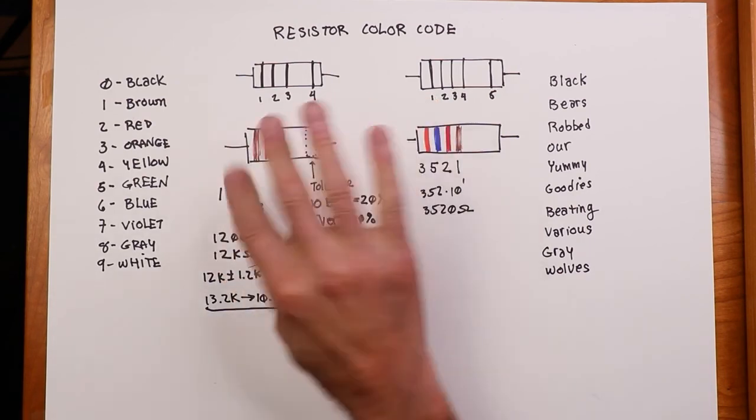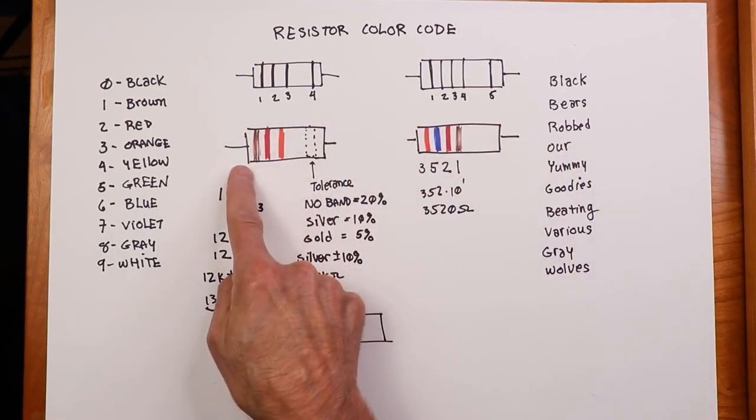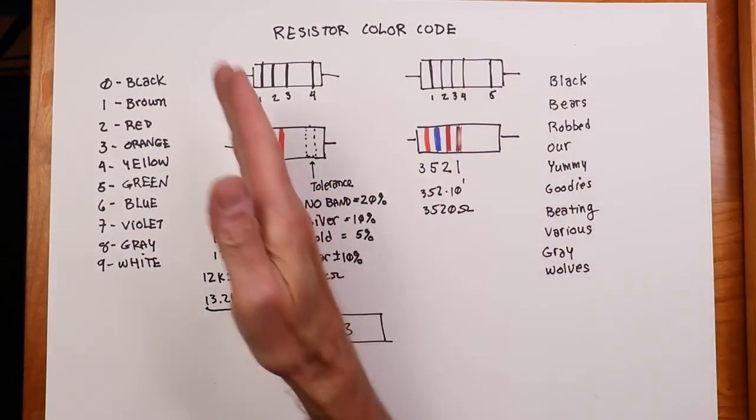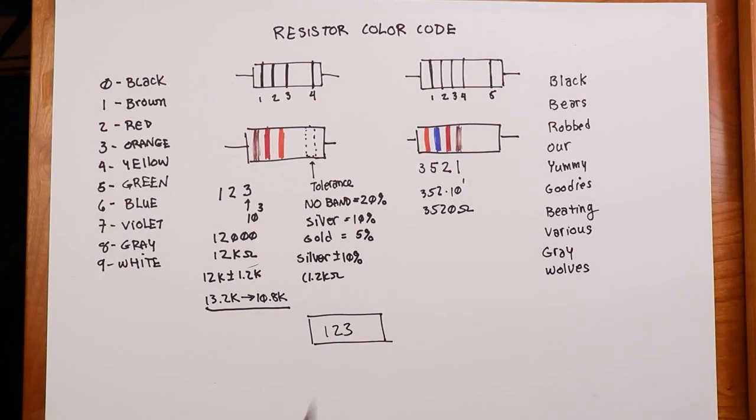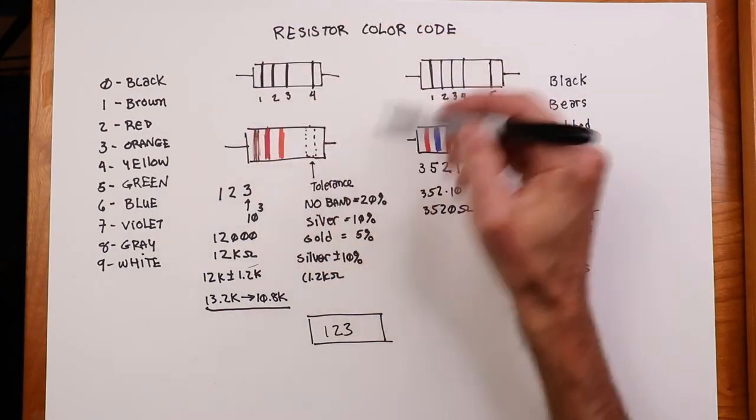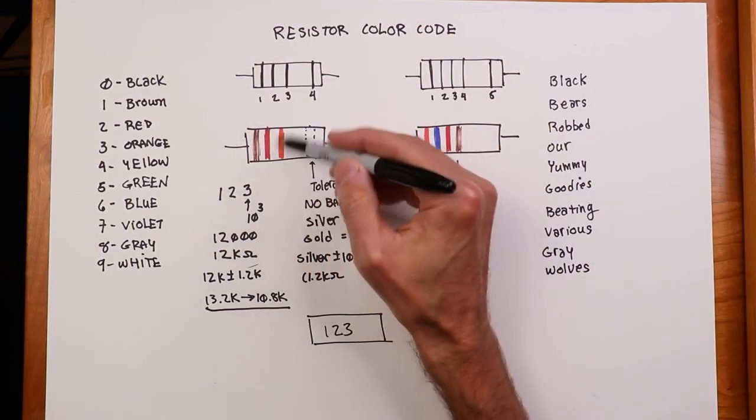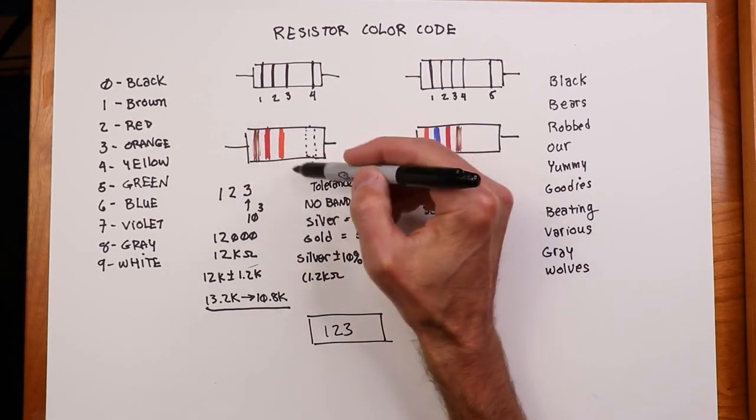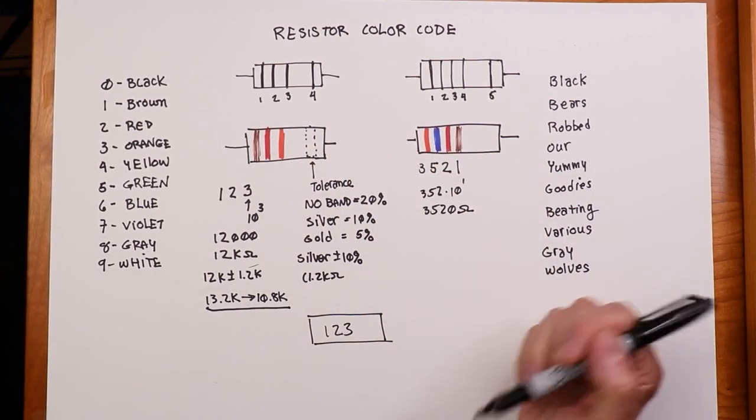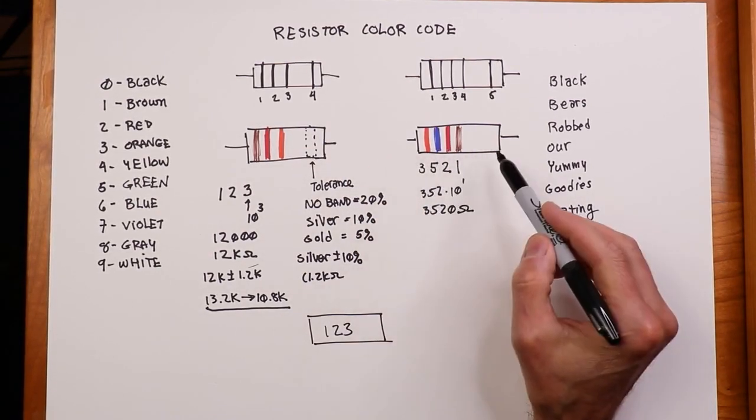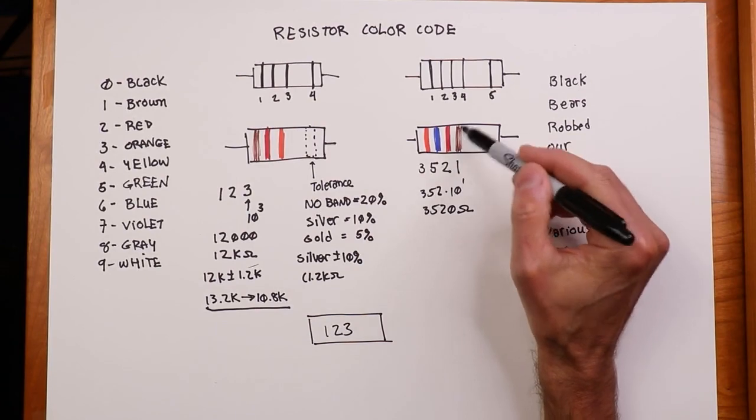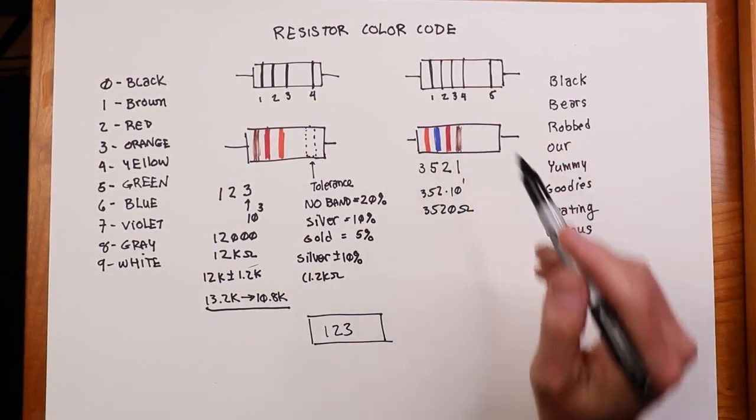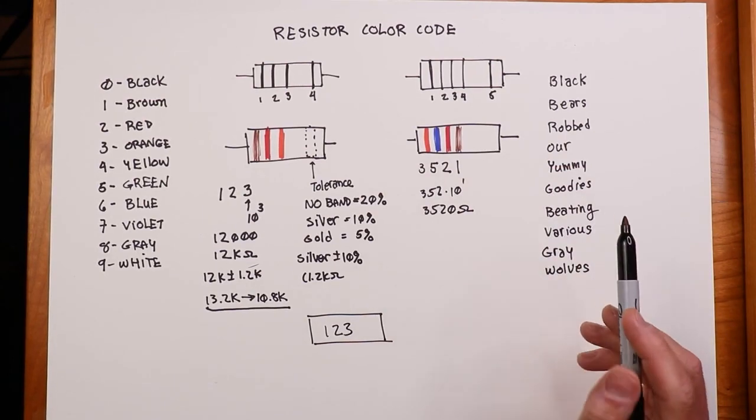So first step, make sure you have this oriented correctly. Don't have like the gold or silver band on this side. Have it oriented like this, then just read across. First two digits, like I said, this is the most common thing you're going to see in lab. First two digits are the precision digits, then the next one is the number of zeros, 10 to the power. And then you have your tolerance band. And then if it's a precision resistor, like I said, there's going to be four of these. So you have three digits for precision, and then the last one is the power of 10. All right.